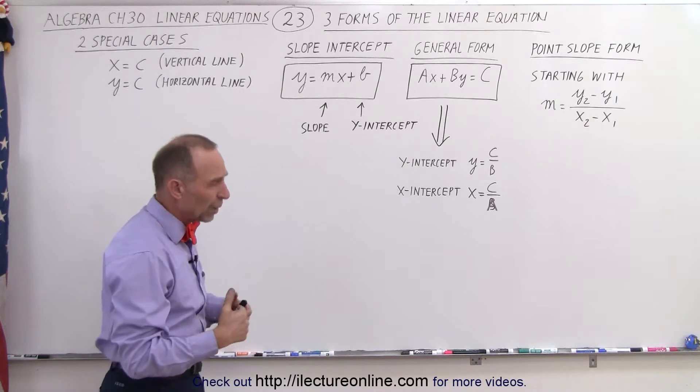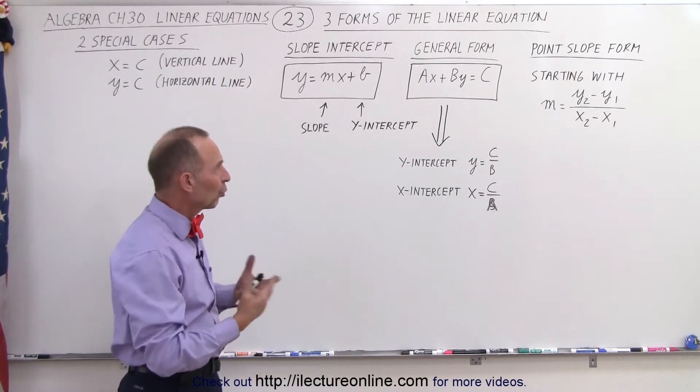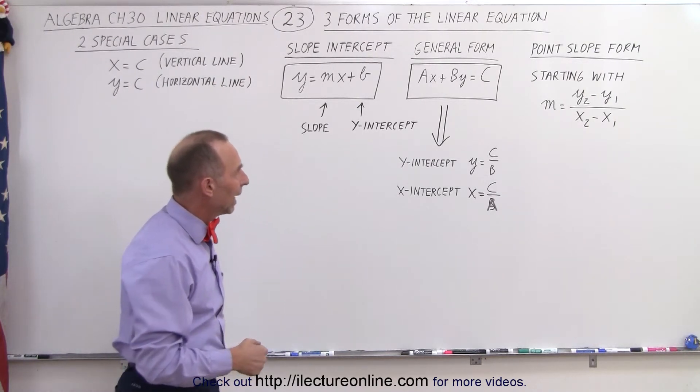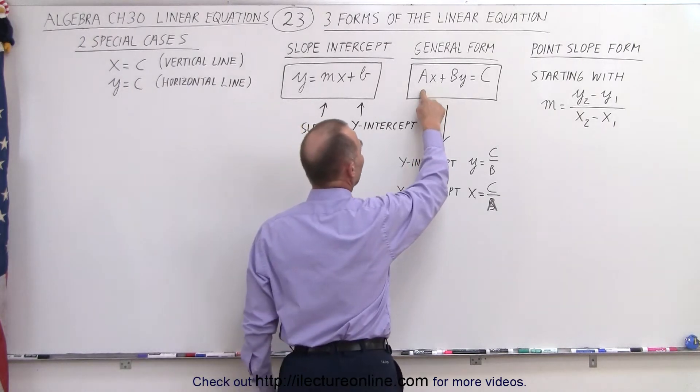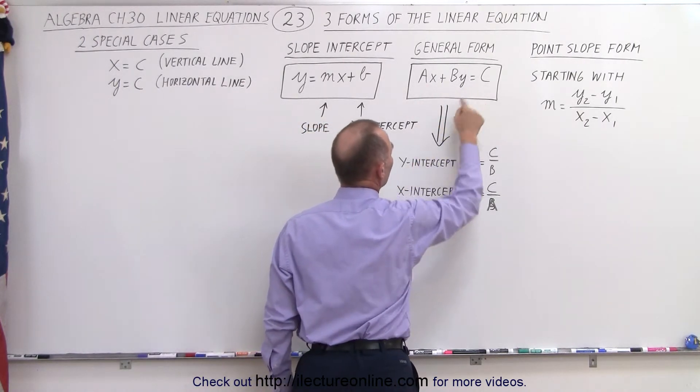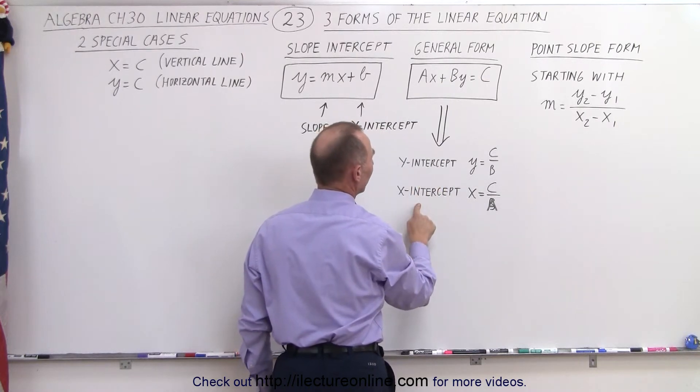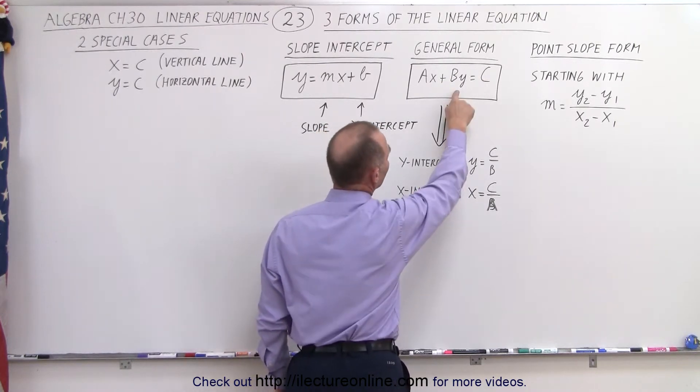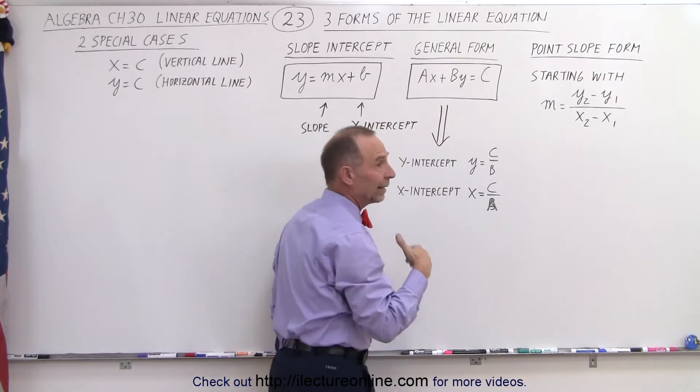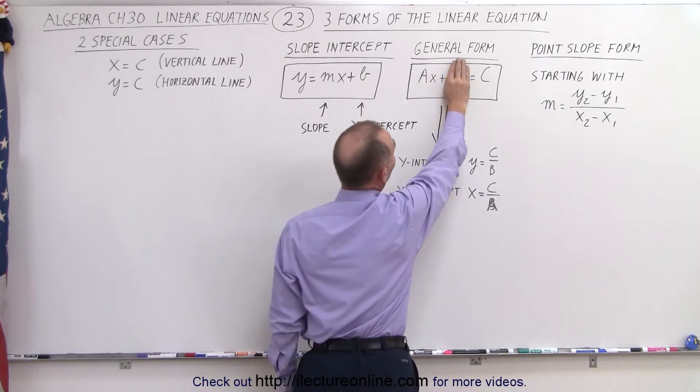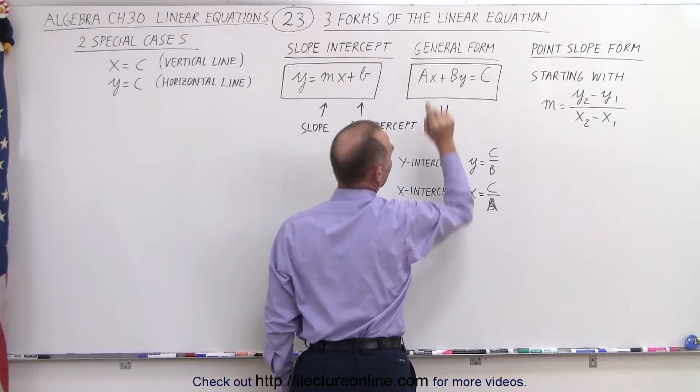The general form - well, we have a general form for every sort of equation in algebra, and this is written in the form of Ax plus By equals C. Now out of this, we can come out with the y-intercept and the x-intercept simply by setting y equal to zero. That is where we are on the x-axis. We have x equals C divided by A.